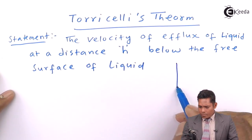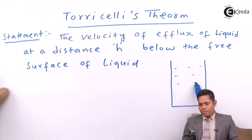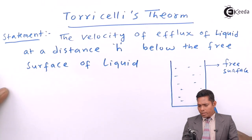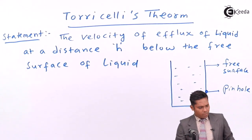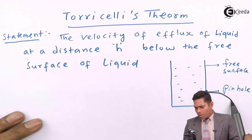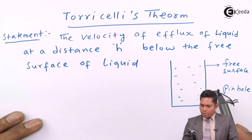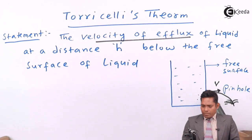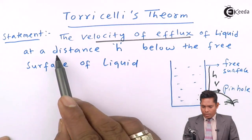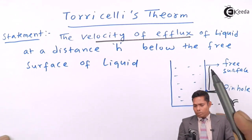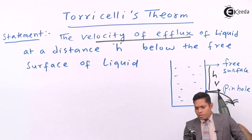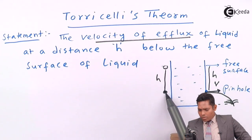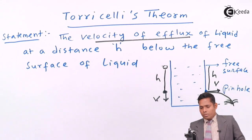The velocity of efflux of liquid at a distance h below the free surface of liquid. This is a container containing some liquid. This is the free surface. I make a pin hole here. The liquid will come out of this pin hole and fall somewhere here. The velocity with which it comes out is called velocity of efflux. The pin hole is made at a height h, at a distance h below the free surface of the liquid. Whatever velocity it comes out, that same velocity will be attained by an object if you allow it to fall to the same height h.